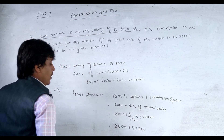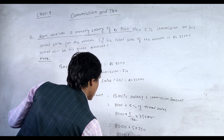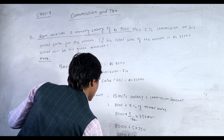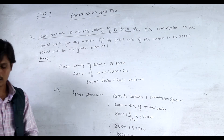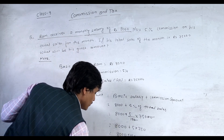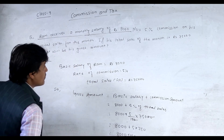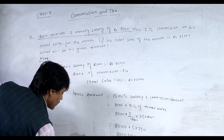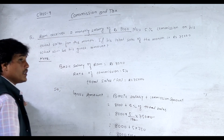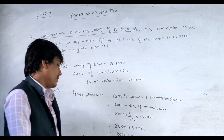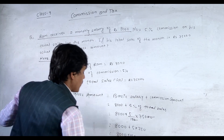So: 8000 plus 5 divided by 100, multiplied by 75000, which equals 8000 plus 5 × 750, that is 8000 plus 3750. Total gross amount = Rs 11750. Therefore, the gross amount received by Ram is Rs 11750. That is our answer.